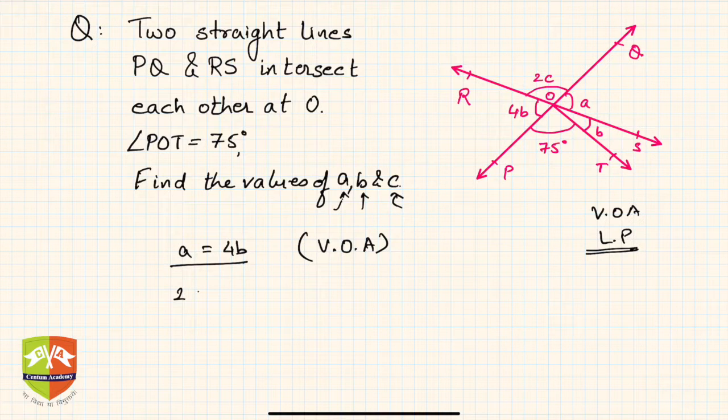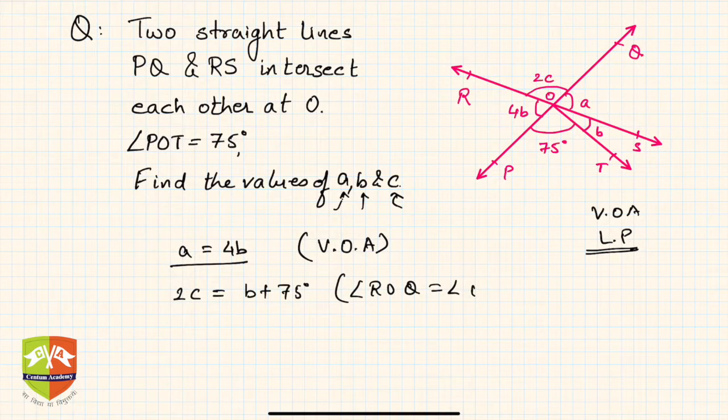Similarly, if you see, 2c is equal to b plus 75 degrees. Again why? Because angle ROQ is equal to angle POS, vertically opposite angles. So this is relation number one, this is relation two.